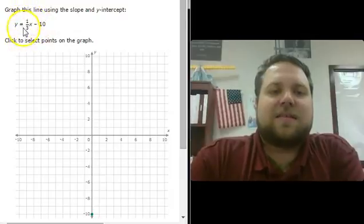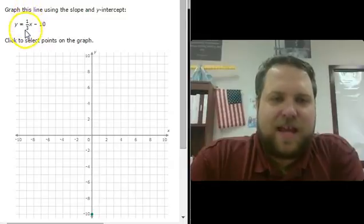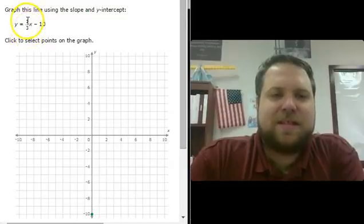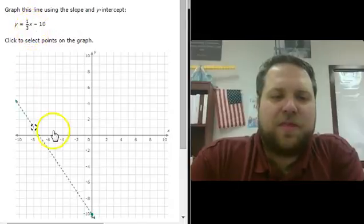Next, we take the slope. Here we have the slope as a fraction, and it's easiest to remember this as rise over run. In this case, the slope is one-third.